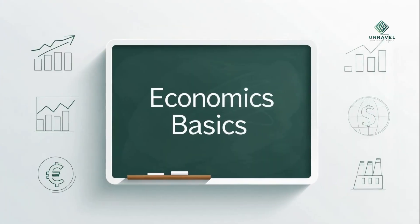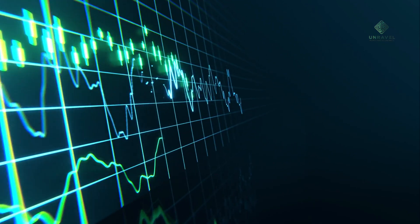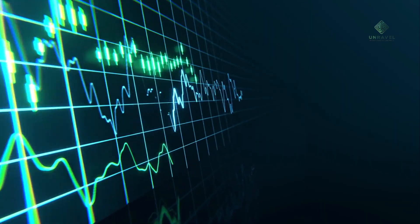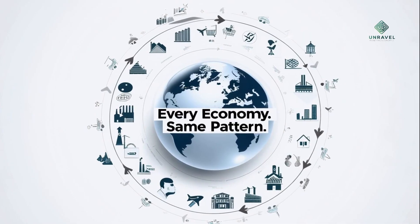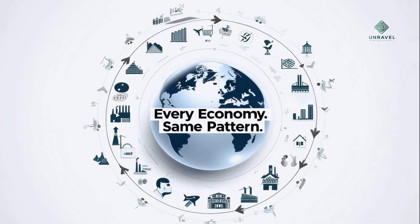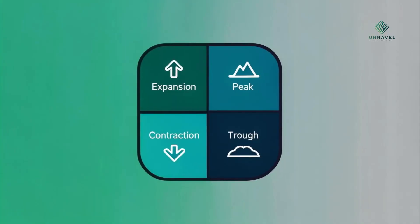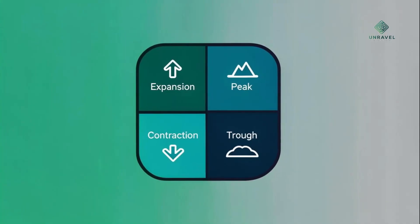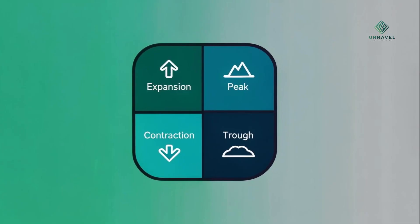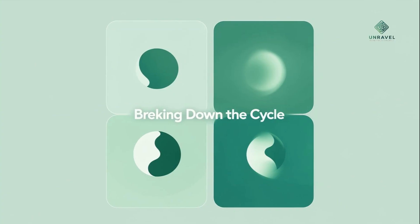Let's start with the basics. The business cycle refers to the natural rise and fall of economic activity over time. It's not random. It follows a pattern, and every economy goes through it. Most economists agree on four key phases: expansion, peak, contraction, and trough. Let's break them down.